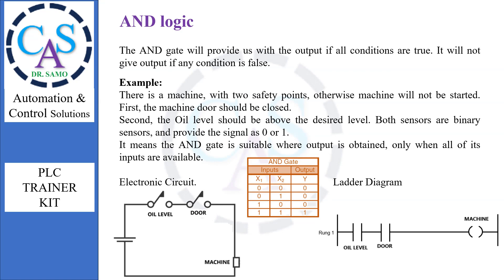The AND gate will provide us with the output if all conditions are true. It will not give output if any condition is false. For example, there is a machine with two safety points, otherwise the machine will not be started. First, the machine door should be closed. Second, the oil level should be above the desired level. Both sensors are binary sensors and provide the signal as 0 or 1. The AND gate is suitable where output is obtained only when all of its inputs are available.